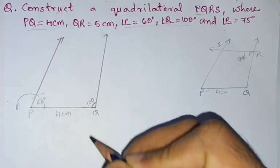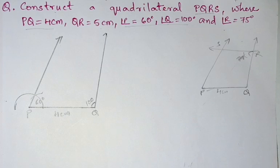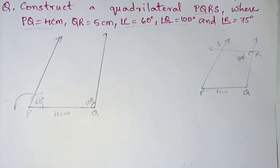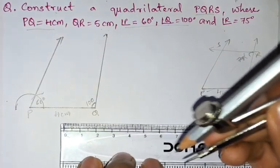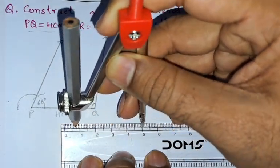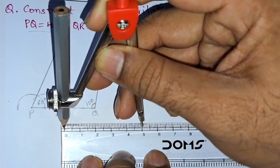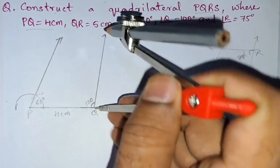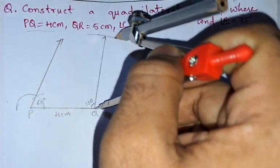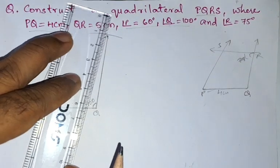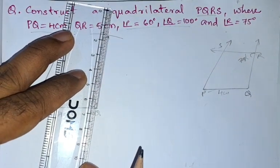This is 100. Next, Q to R is 5 centimeters, so we need to take the radius 5 centimeters. Let us extend it so that it will meet the arc.